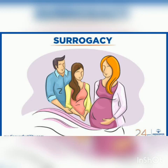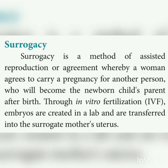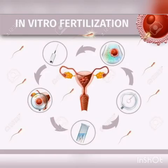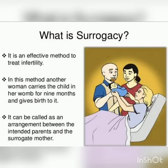Next is surrogacy. Surrogacy is a method of assisted reproduction — an agreement whereby a woman agrees to carry a pregnancy for another person, who will become the newborn child's parent after birth. Through in vitro fertilization, embryos are created in the lab and transferred into the surrogate mother's uterus. After childbirth, the surrogate mother hands over the child to the original parents.